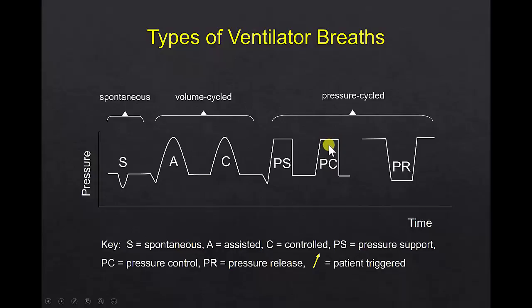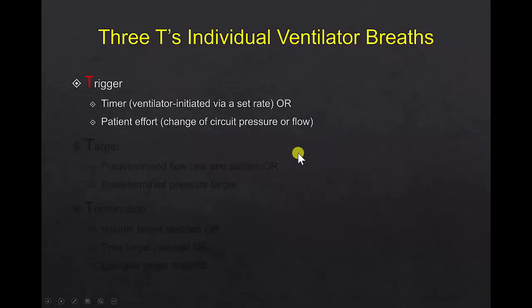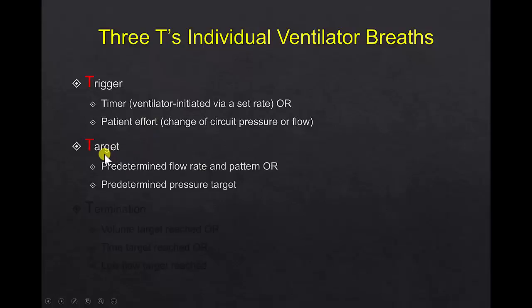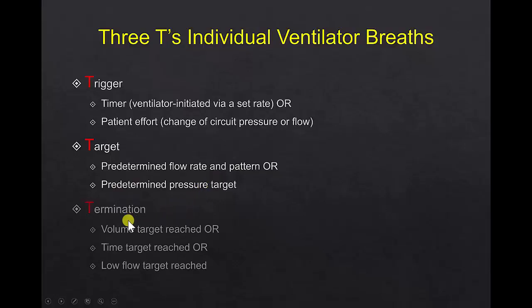Three of these breaths are triggered by the patient — a spontaneous breath, an assisted breath, and a supported breath — while the other three are machine-triggered by a timer. The three T's of individual ventilator breaths are: Trigger — what starts the breath, either a timer or the patient's effort; Target — either a flow rate and pattern or a pressure target; and Termination — when the volume is reached, time is reached, or the flow drops to a critically low value indicating the patient has finished inhaling, as seen in pressure support ventilation.